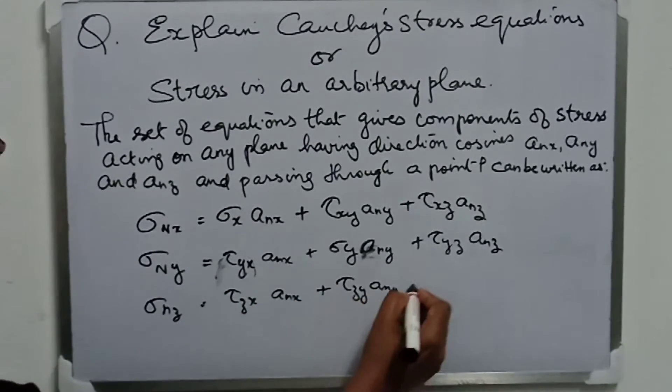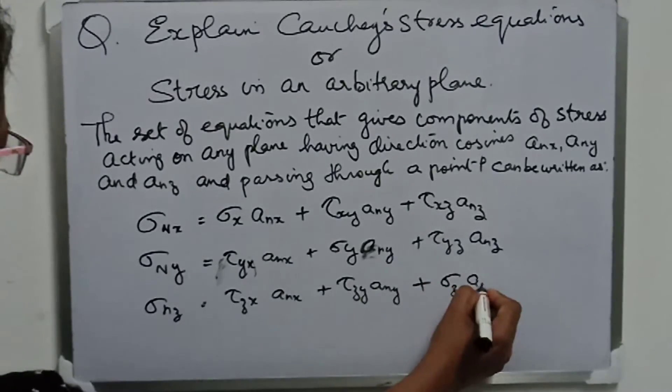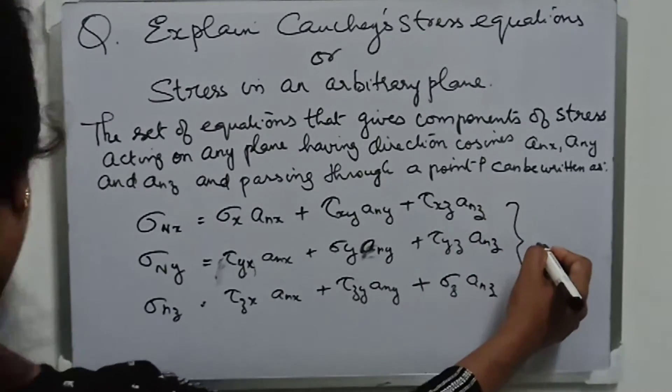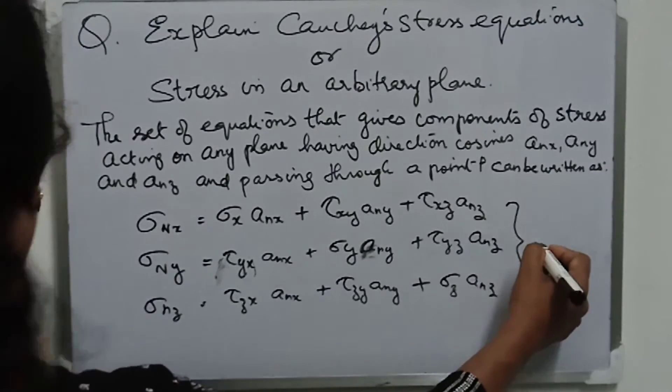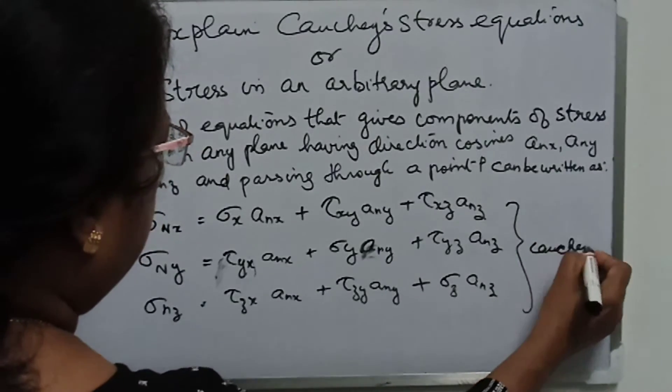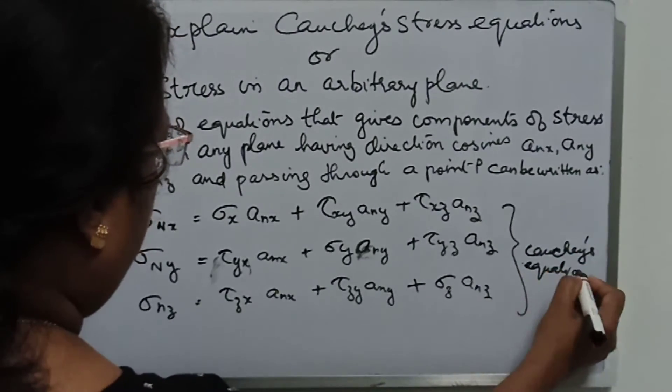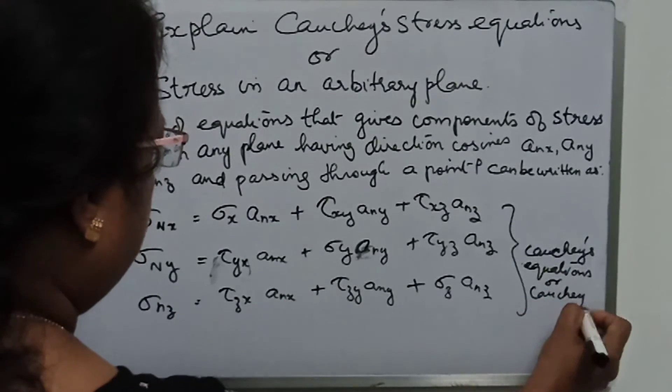And σnz will be τzx times anx plus τzy times any plus σz times anz. So these set of equations are called Cauchy's stress equations or Cauchy's stress formula.